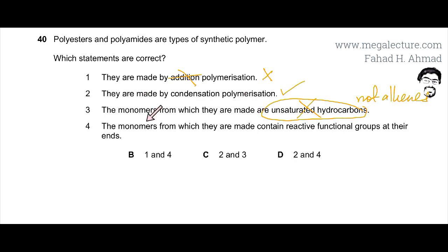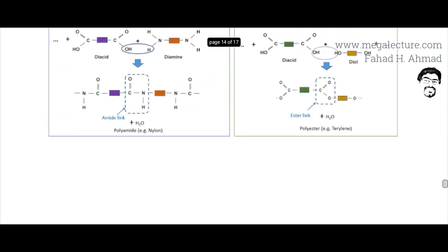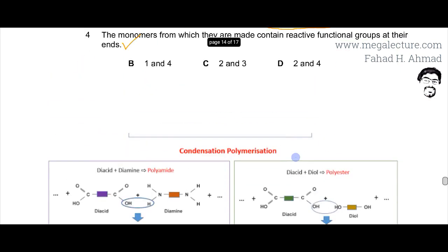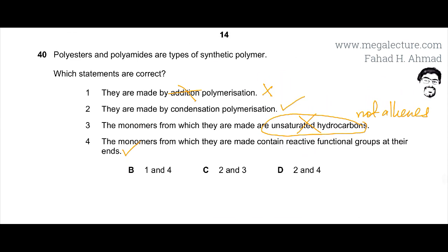The fourth statement says the monomers from which they are made contain reactive functional groups at their ends — this is correct. Looking at the monomers again: amine and amine on both sides, carboxylic acid and carboxylic acid on both sides. These are reactive functional groups, so the fourth statement is also correct.